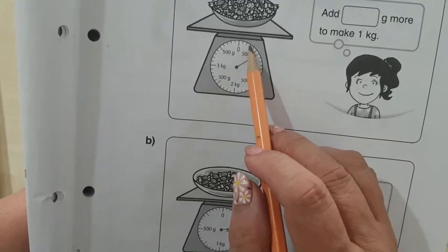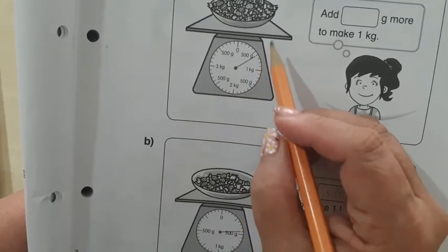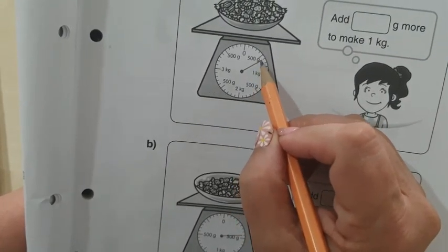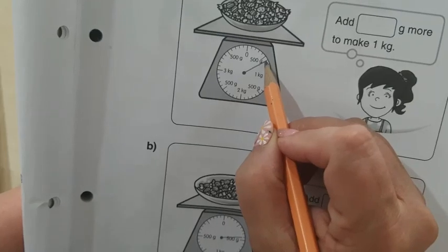10 parts means each part is 100. Now this is pointing to 600 grams.